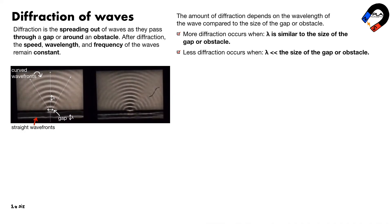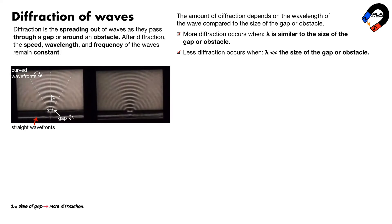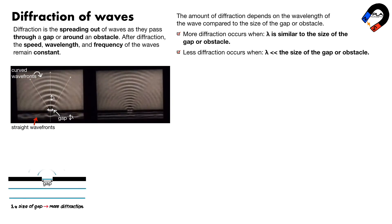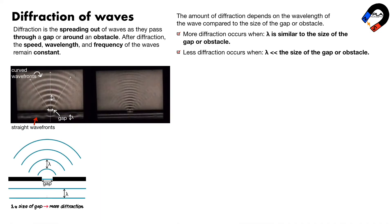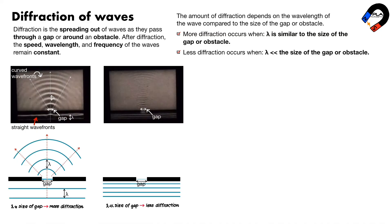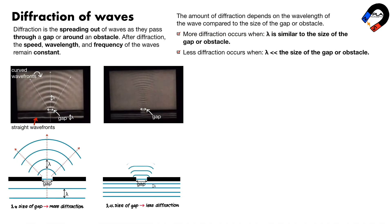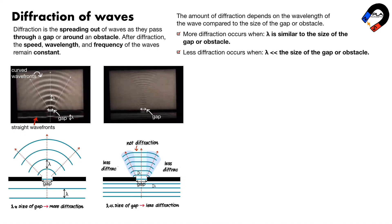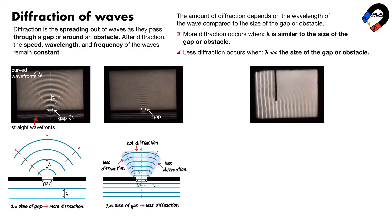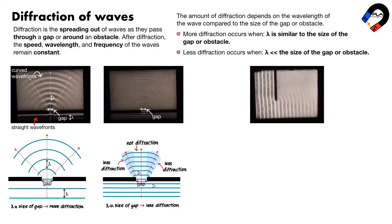To draw diffraction diagrams: when wavelength is similar to the gap size, draw the obstacles and gap, draw straight wave fronts with wavelength similar to gap size, then draw curved wave fronts spreading out with the same wavelength. When the wavelength is much smaller than the gap, the diffracted wave fronts spread out less and are less curved. The region directly behind the gap has straight wave fronts showing no diffraction, while the edges show spreading. When waves pass through the edge of an obstacle, they also diffract at the edge, and when wavelength decreases the amount of diffraction decreases.